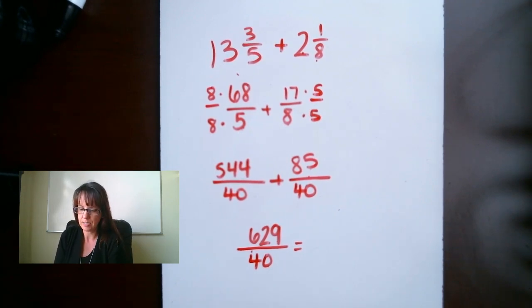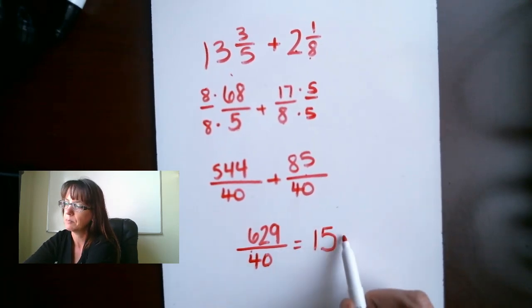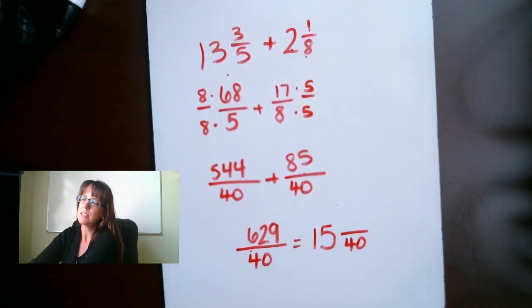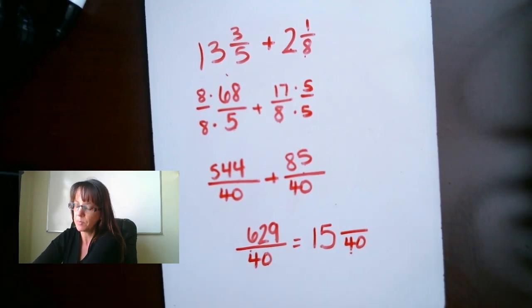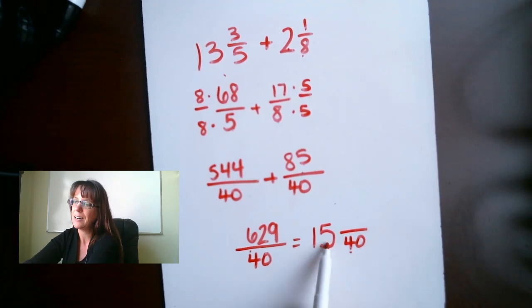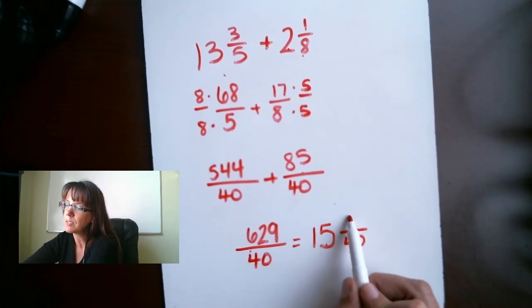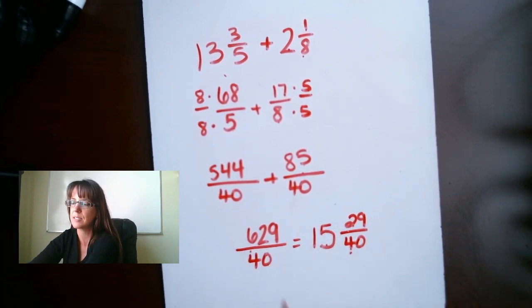So, what we're looking for is how many times does 40 go into 629. So, if I take 629 and divide it by 40, I end up with 15.725. Let's just keep that 15 for now. We're going to keep that denominator, 40. And, so since I don't have the decimal, we're going to do 40 times 15, which gives us 600. 600 plus 29 will give us 629. So, 40 times 15 gives us 600 plus 29 gives us that 629.